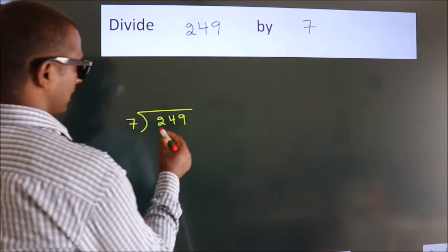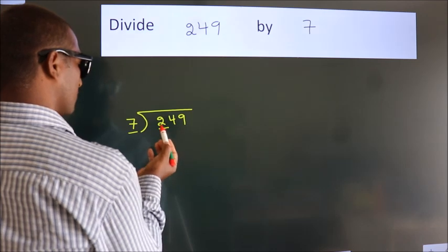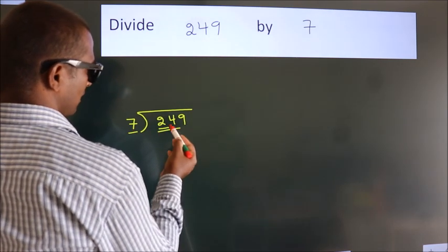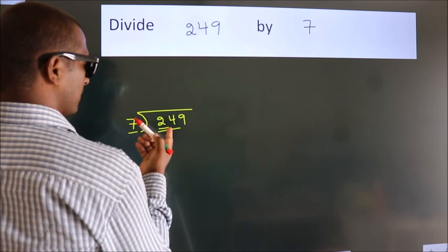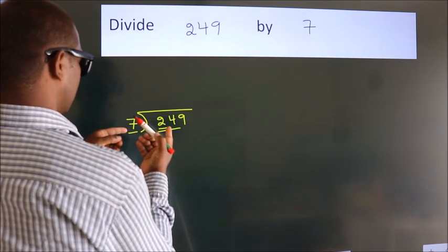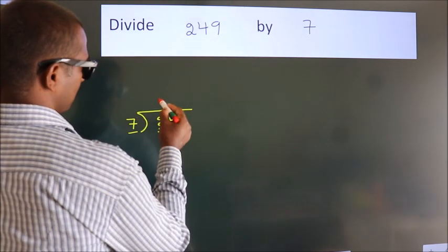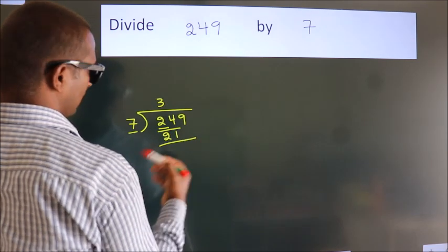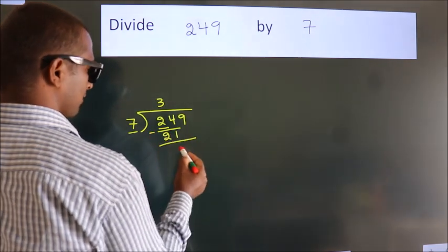Next. Here we have 2, here 7. 2 is smaller than 7, so we should take 2 numbers: 24. A number close to 24 in the 7 table is 7 threes, 21. Now we should subtract. We get 3.